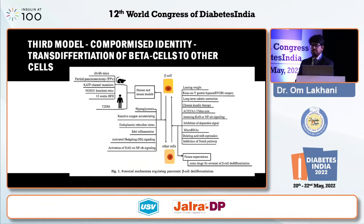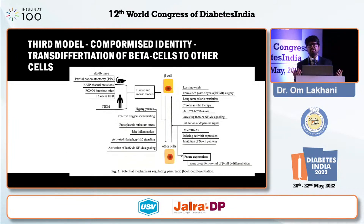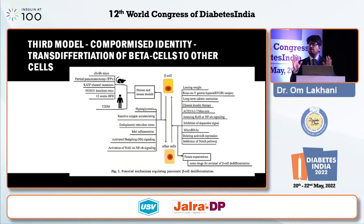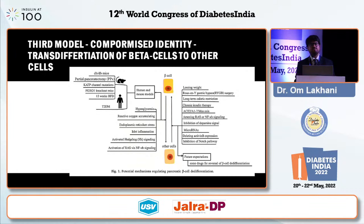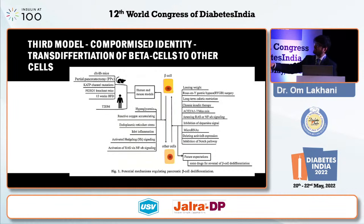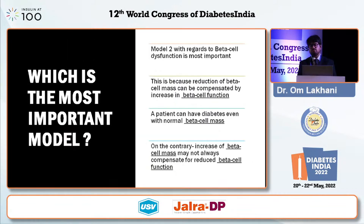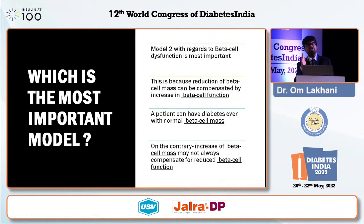The third model is trans-differentiation of beta cells — beta cells start behaving like alpha cells, changing their nature. This is still an emerging area of pathogenesis. Perhaps 10 years from now we will have a drug which prevents beta cells from converting to alpha cells and allows them to return to beta cell function. Of all three models, the most important is model 2, beta cell dysfunction, because at this point in time that is the one we can really treat and help.